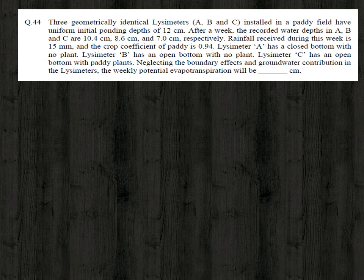Lysimeter A has a closed bottom with no plants; lysimeter B has an open bottom with no plants; lysimeter C has an open bottom with paddy plants. Neglecting boundary effects and groundwater contribution, the weekly potential evapotranspiration is dash centimeter.